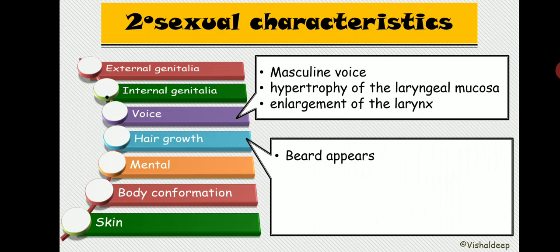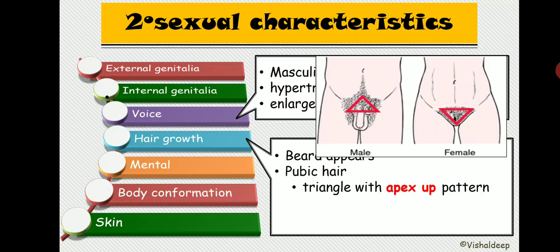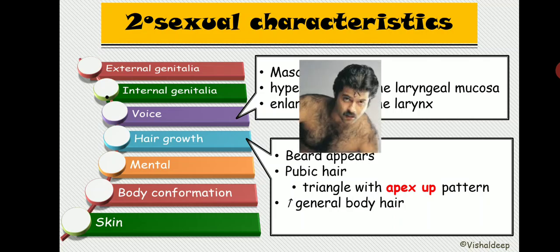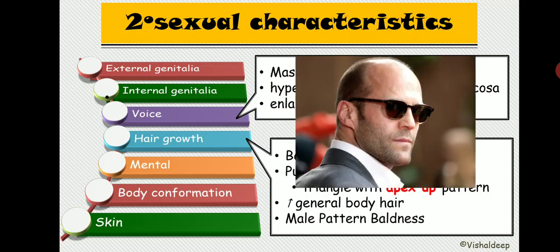Regarding hair growth, beard and pubic hair appear. Male pubic hair has an apex-up triangular pattern, while female pubic hair has an apex-down triangular pattern. Testosterone also increases general body hair and causes male-pattern baldness.